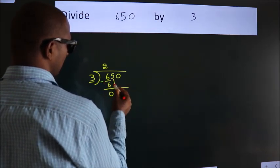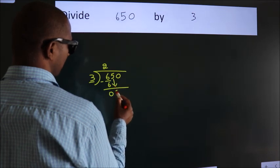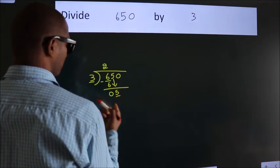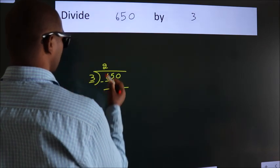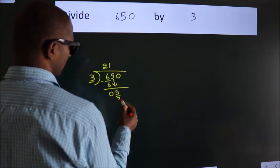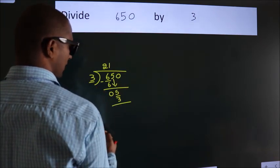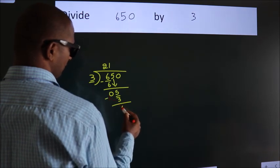After this, bring down the beside number. So, 5 down. 5. A number close to 5. In 3 table is 3 1s, 3. Now, we subtract. We get 2.